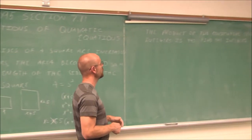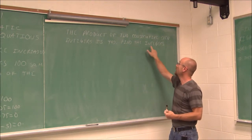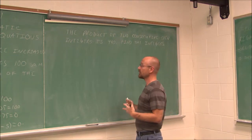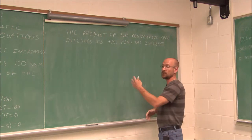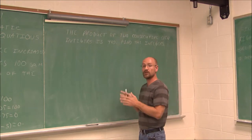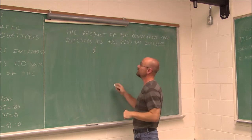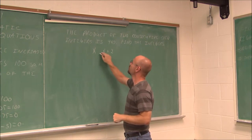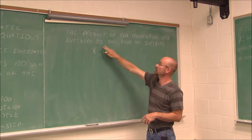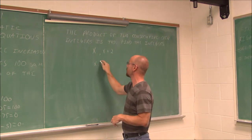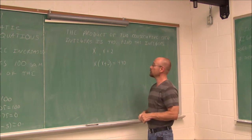Now let's look at another application: the product of two consecutive even integers is 440 — find the integers. Consecutive even integers are numbers like 2, 4, 6, 8 — always two apart on the number line. So if I have a number x, the next consecutive even integer is x plus 2. The product means multiply, so x times (x + 2) equals 440.